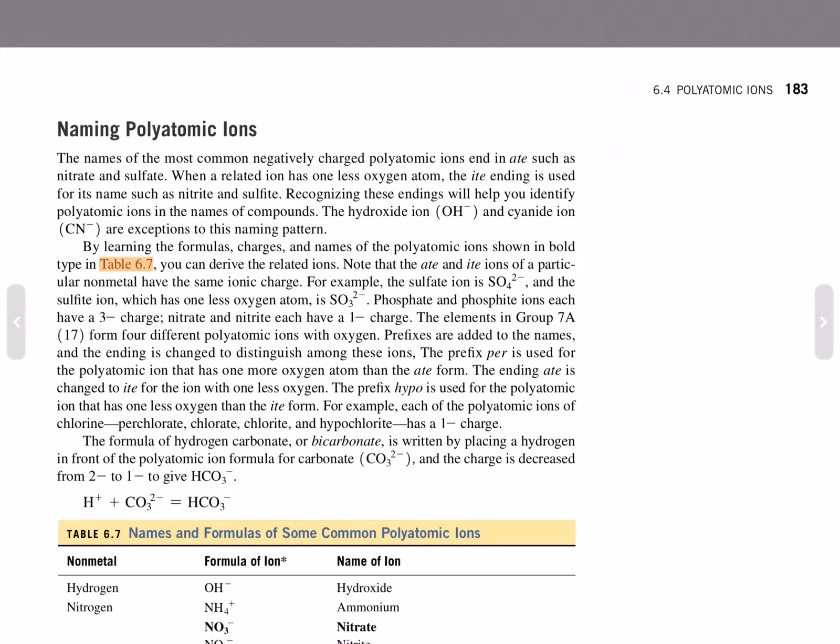Phosphate and phosphite ions each have a negative 3 charge. Nitrate and nitrite each have a negative 1 charge. The elements in Group 7A form four different polyatomic ions with oxygen. Prefixes are added to the names, and the ending is changed to distinguish among these ions.